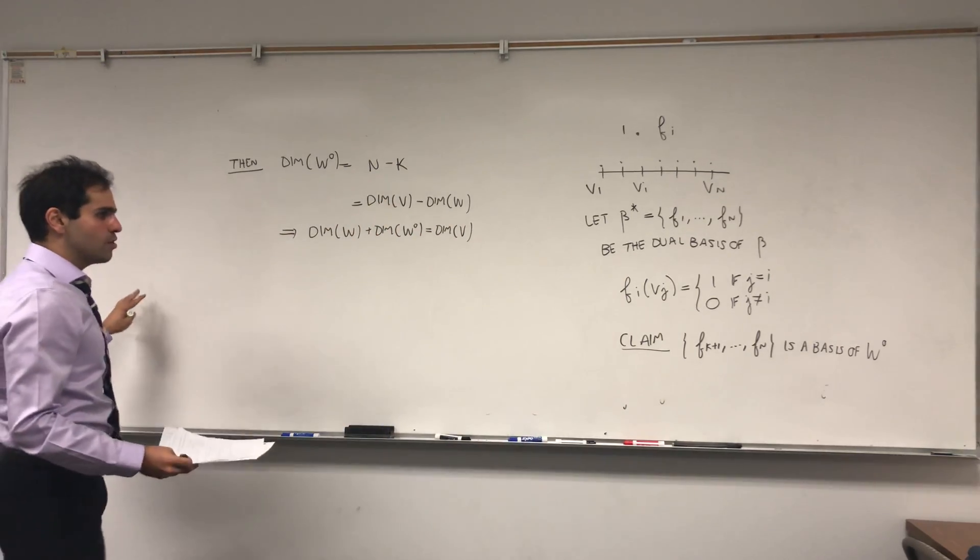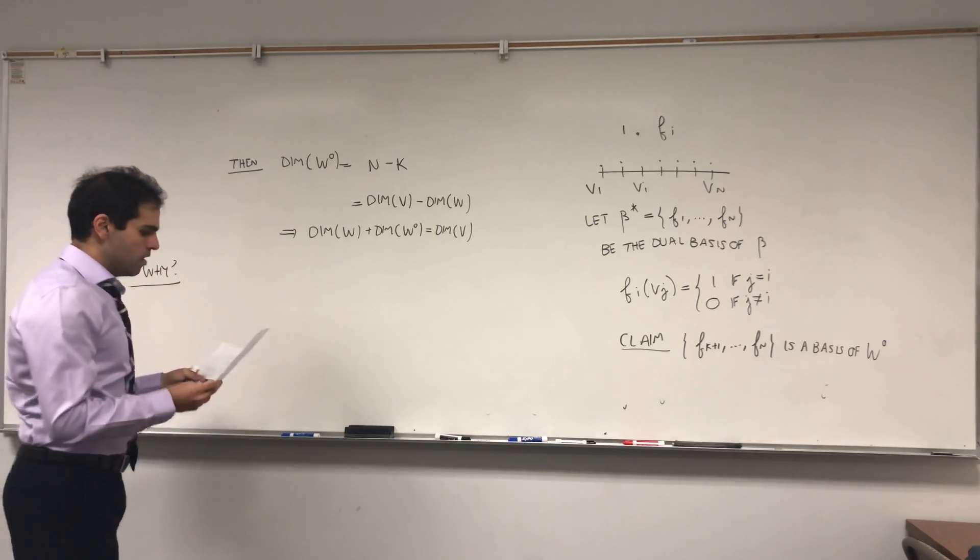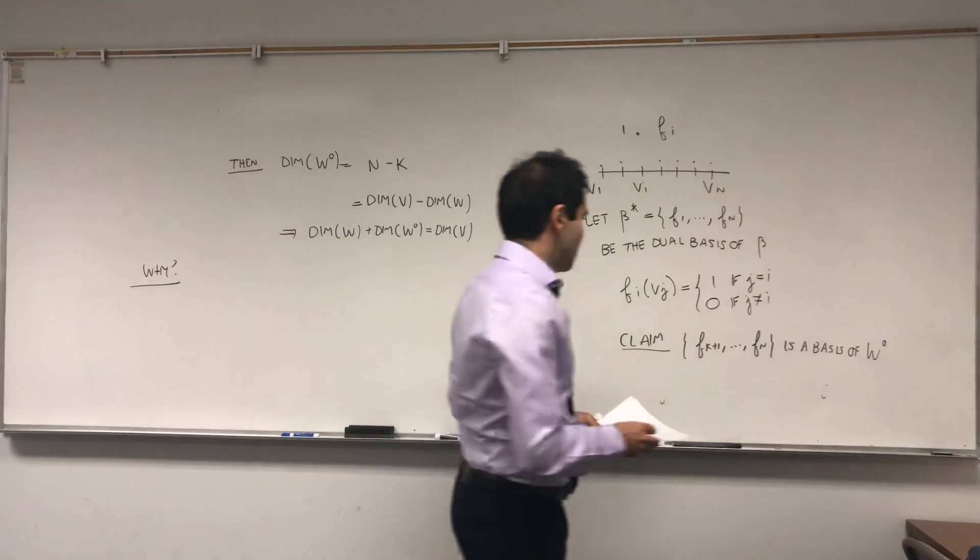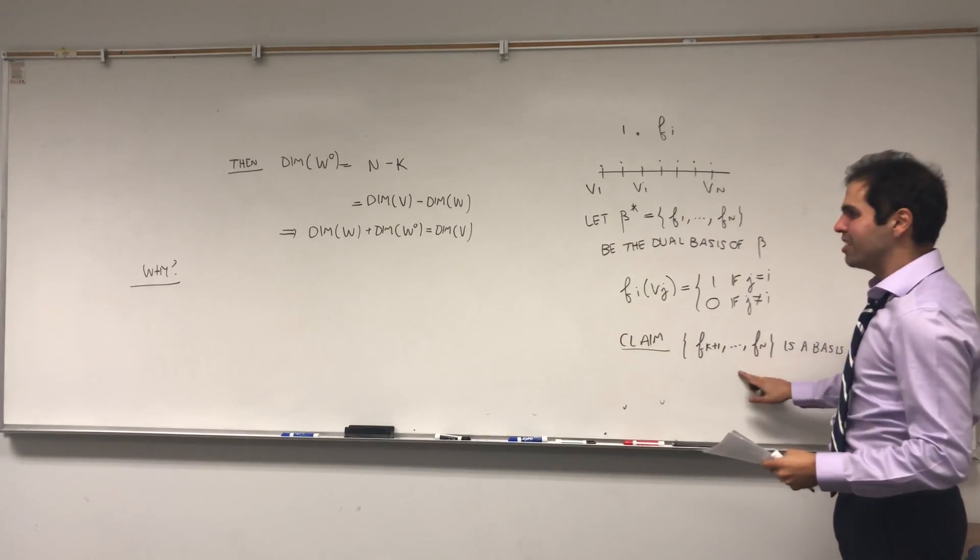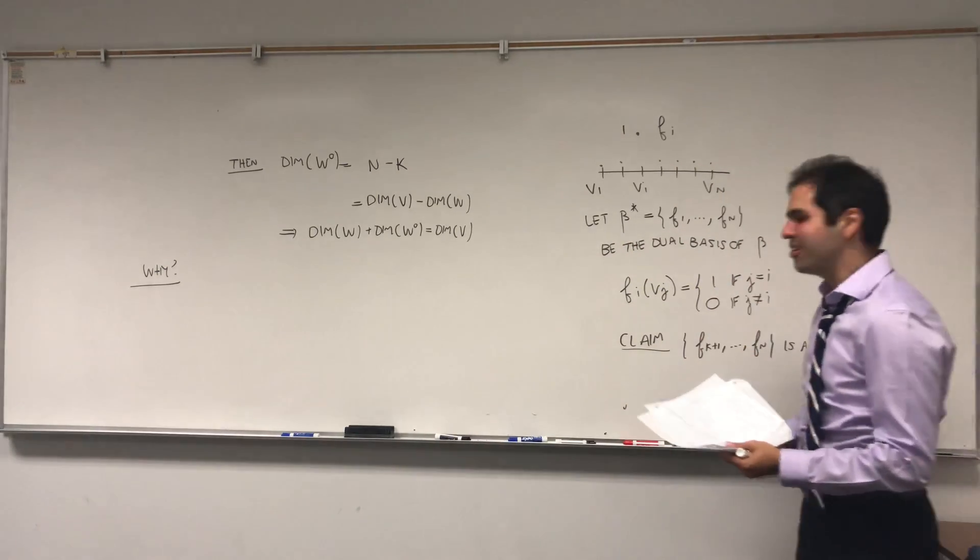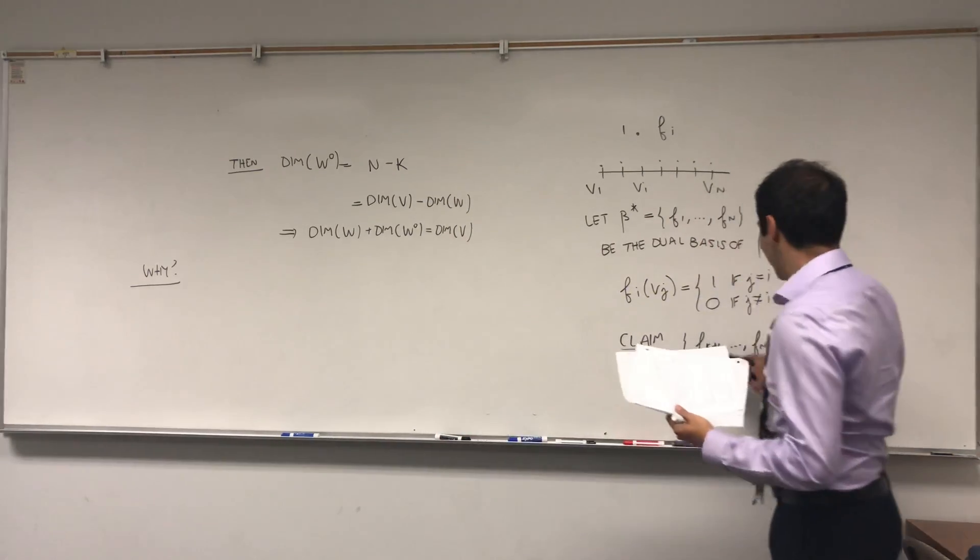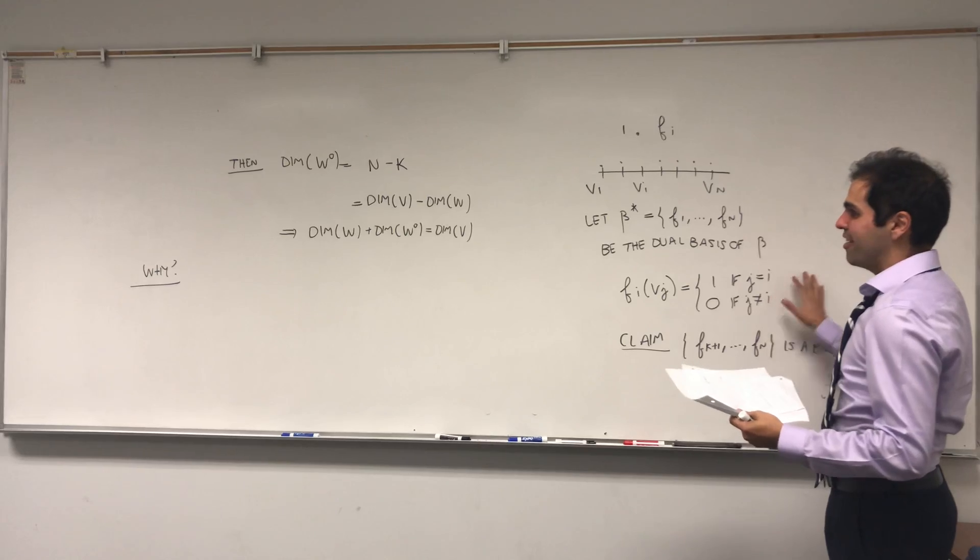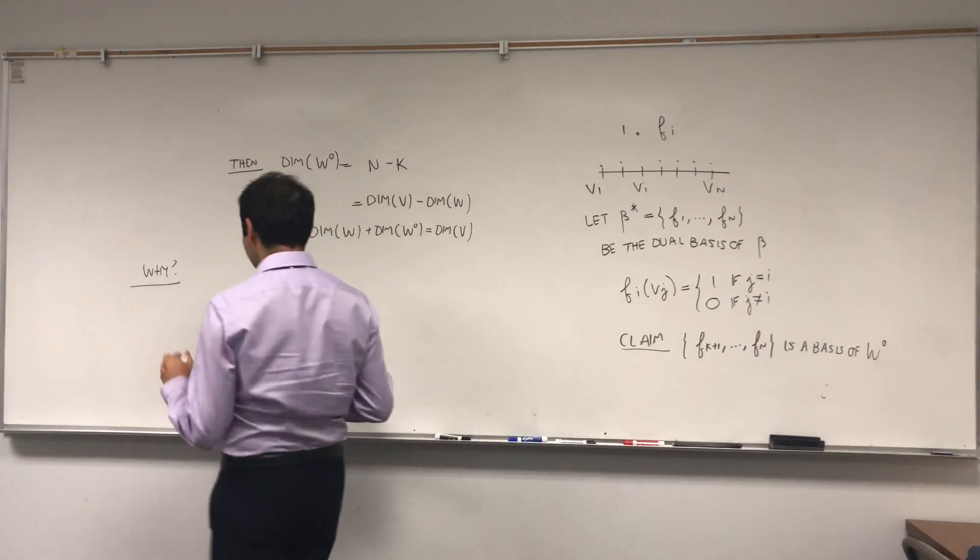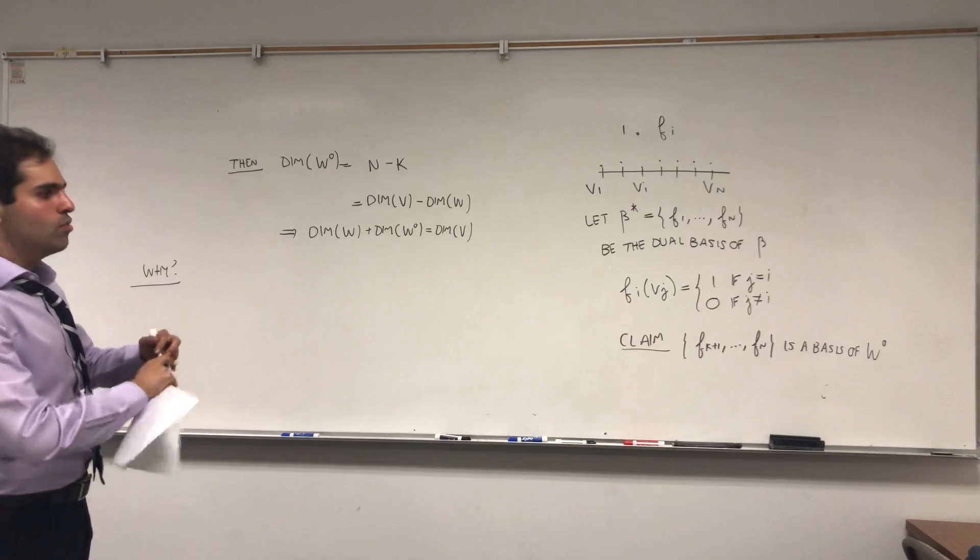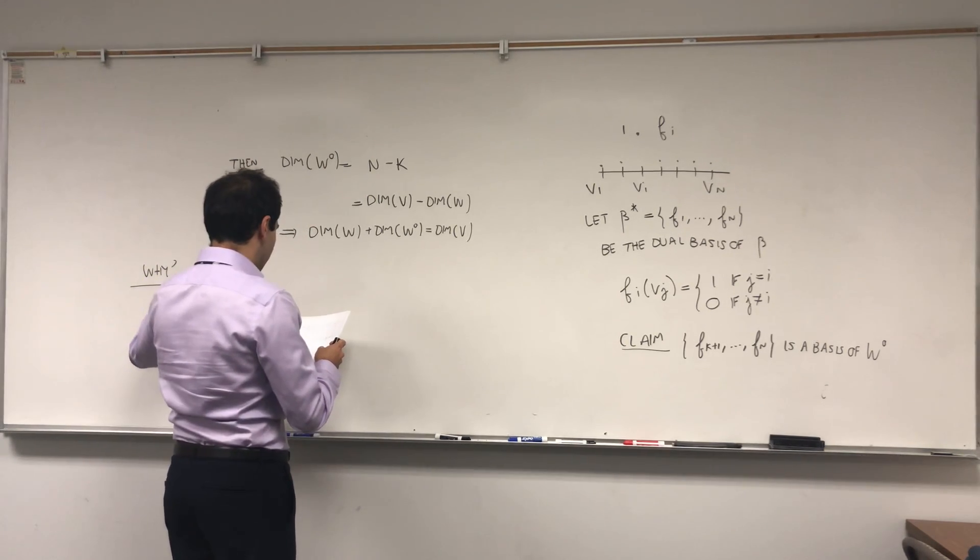So let's just show this. And in fact, it's not too bad. So why? Well, first of all, we need to make sure that those ones are actually in W naught. So we need to make sure that all those Fk plus ones up to Fn, they sort of annihilate our space W. But this just follows, if you want, from the definition of Fk plus one, et cetera, et cetera.